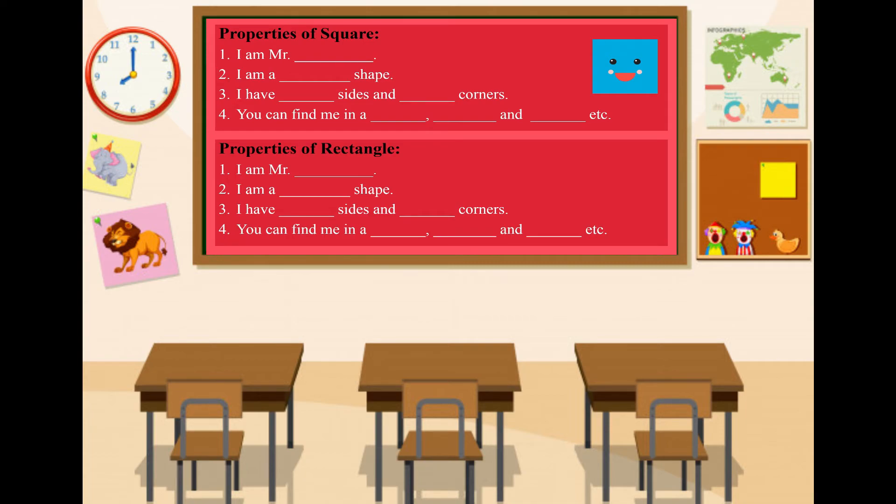Firstly you have to write the properties of square. Then you have to write the properties of rectangle. You have to write the properties of pentagon.